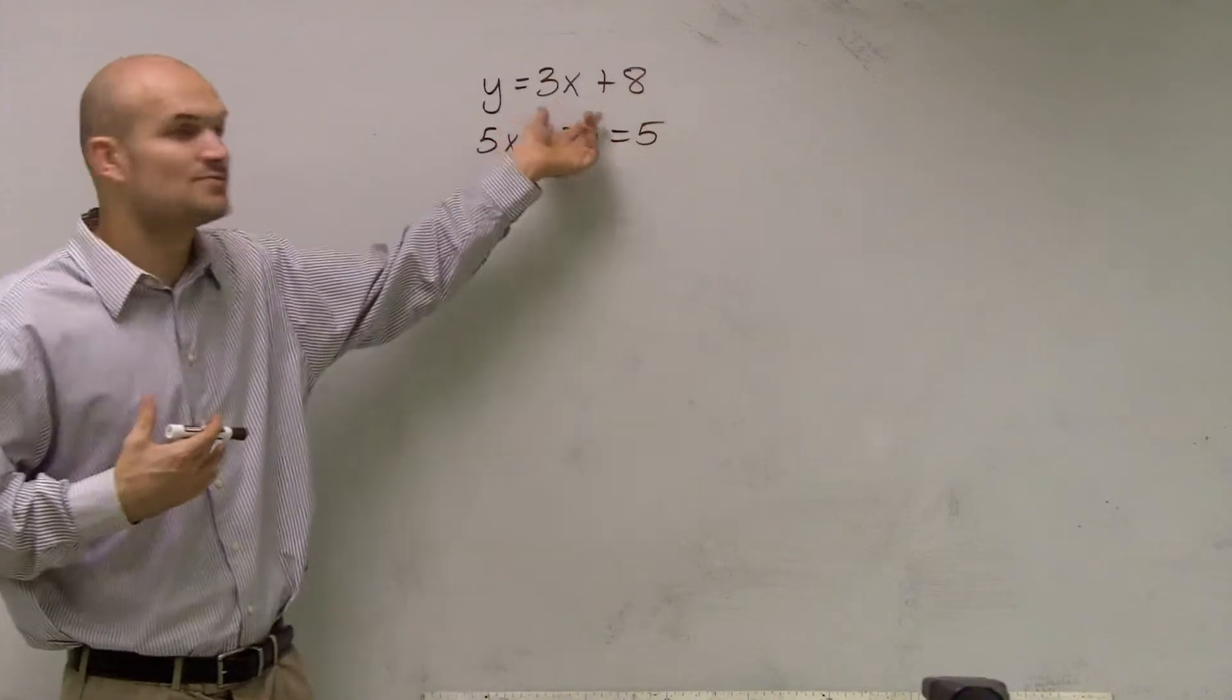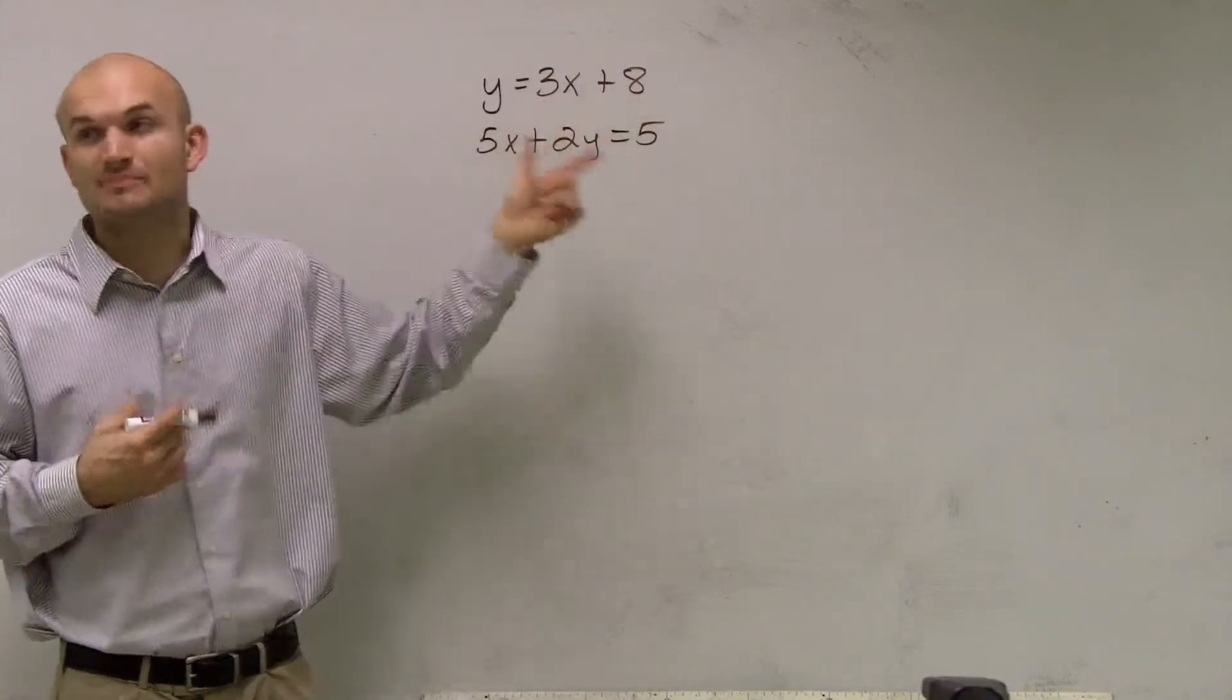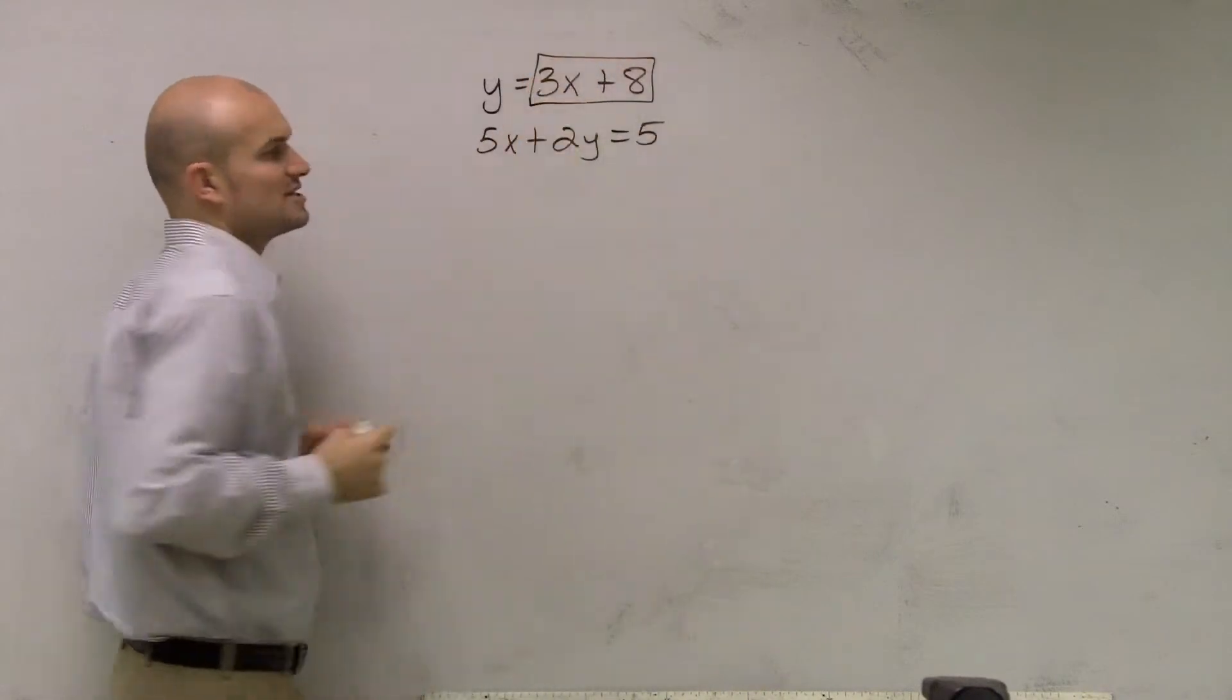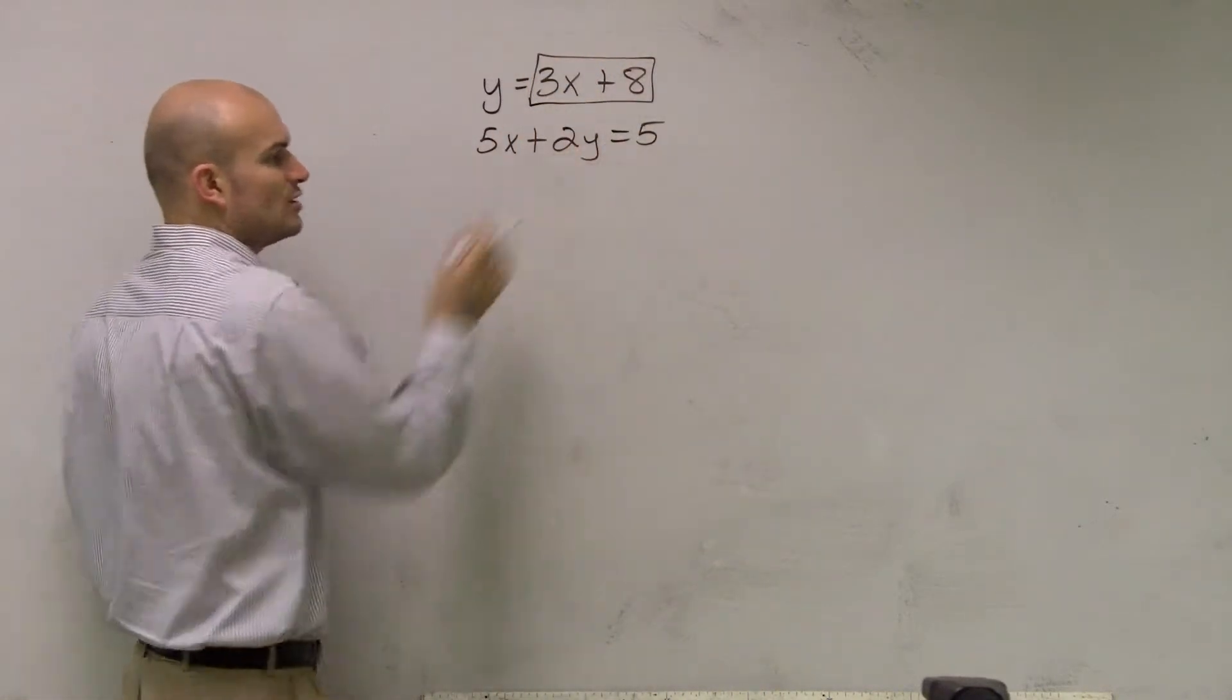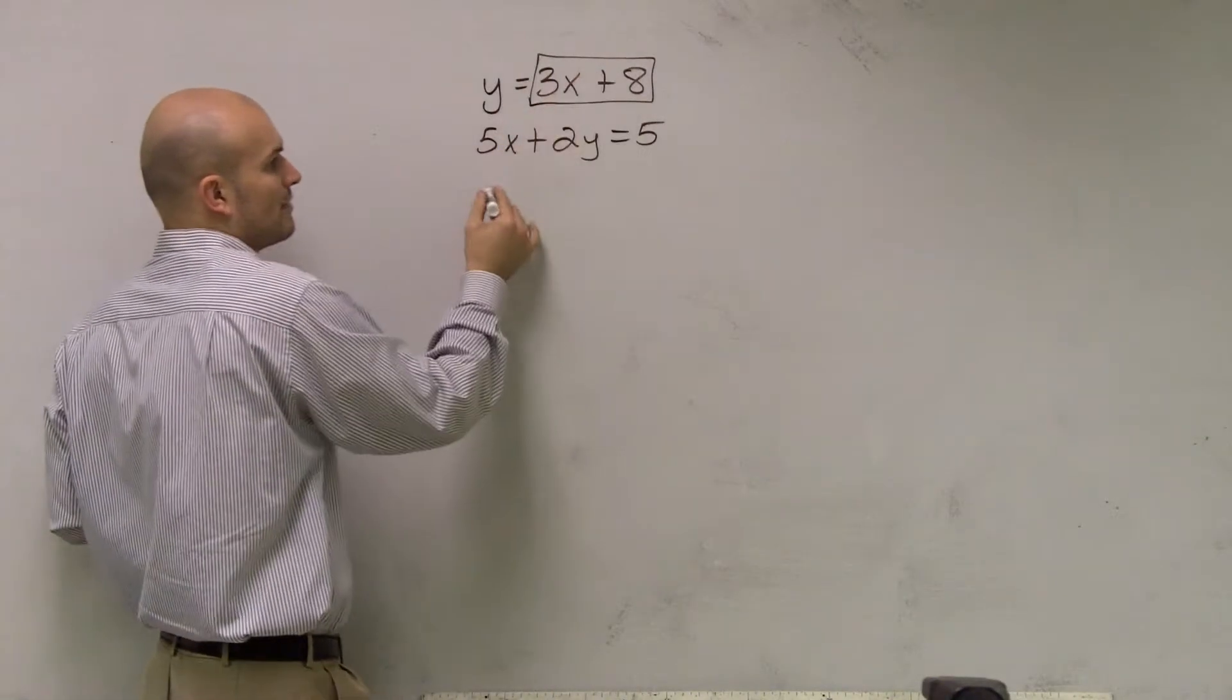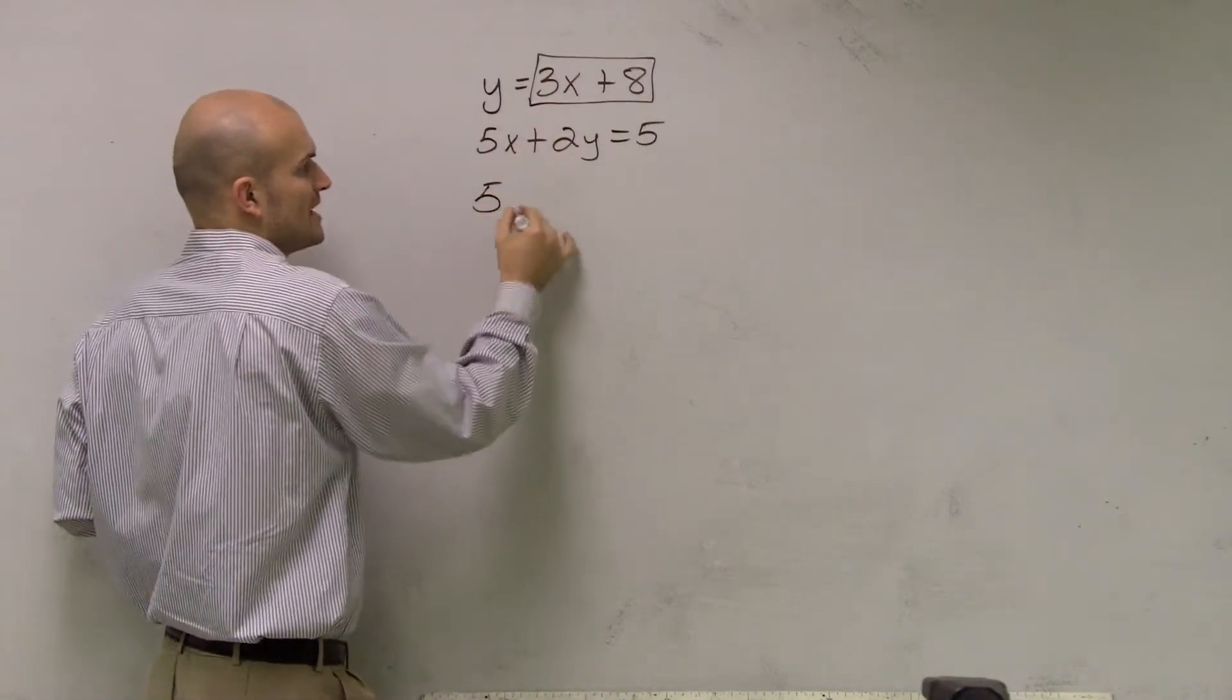So then what I'm simply going to do is that is what I'm going to want to substitute into my second equation. So I have y equals 3x plus 8. So in this second equation, instead of writing y, I'm going to write in what my y represents, which is 3x plus 8.